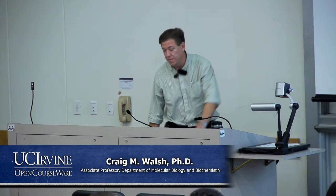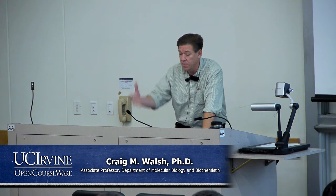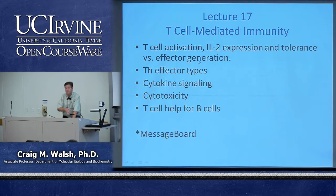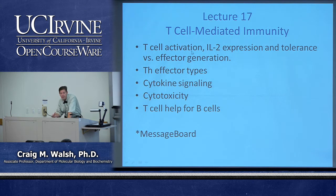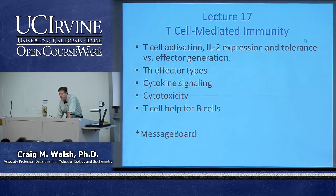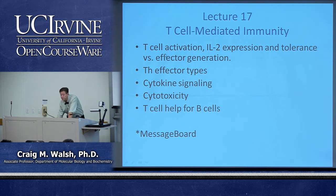We'll go ahead and get started. Last lecture we talked about T cells, what they're recognizing, how they get activated, and the fact that these cells are primarily out in the peripheral lymphoid tissues. Today we're going to finish our discussion about T cell activation — in particular what's actually happening within the cell and how that involves the production of the cytokine called interleukin-2 or IL-2. We'll also talk about tolerance and how co-stimulation is involved in promoting tolerance of T cells.